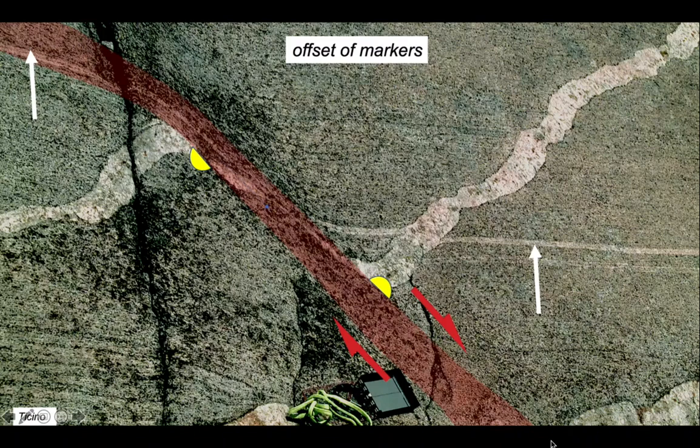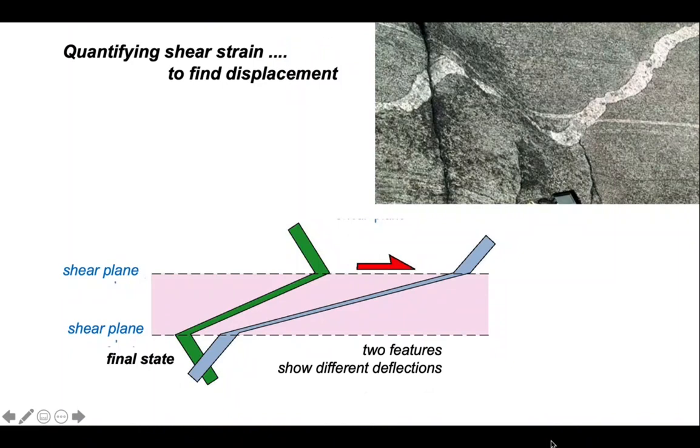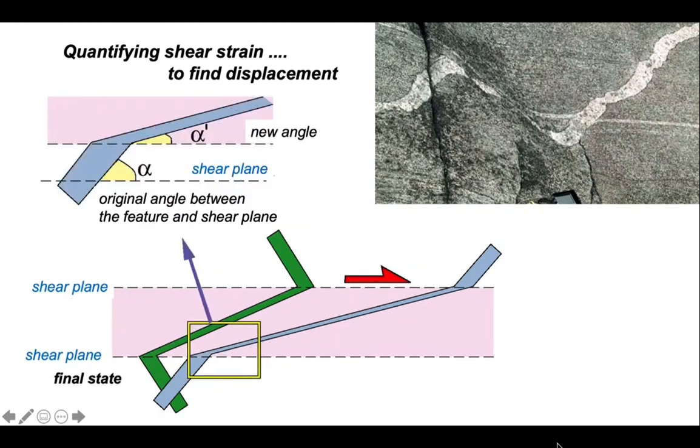Neither marker is perfectly orthogonal to the shear zone. So let's generalize the solution to quantifying shear strain for markers of different orientations. So let's consider just this blue marker, which enters the shear zone from the base, deflects over to the right, and then exits further right again, betraying the top to the right shearing.